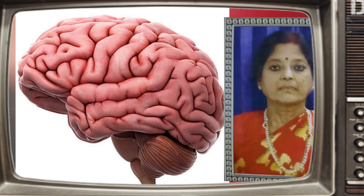Make up a sentence in which the first letter of each word represents the initial of what you want to remember. For example, the sentence 'Every Good Boy Does Fine' helps memorize the letters E, G, B, D, and F.